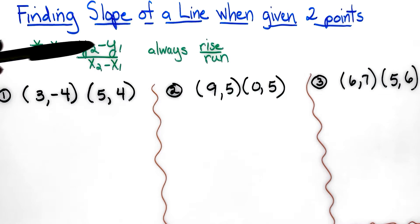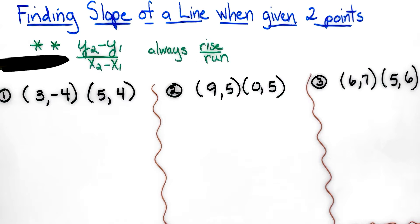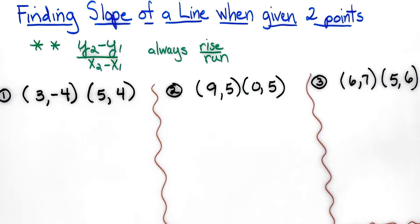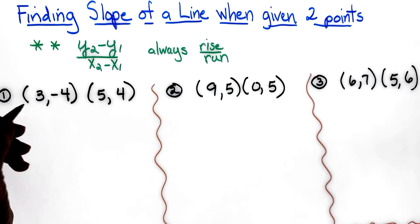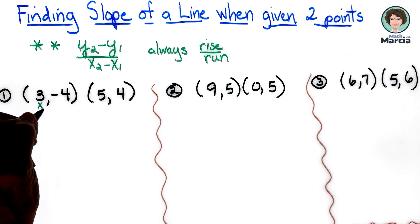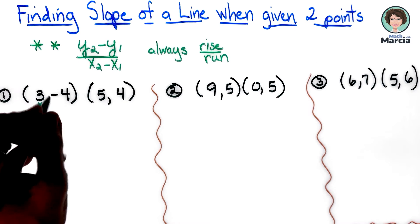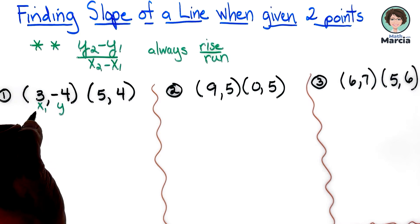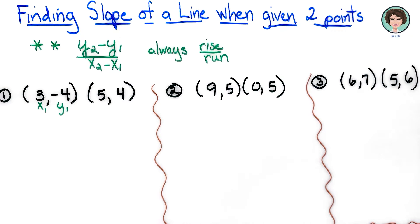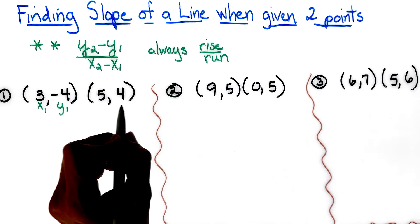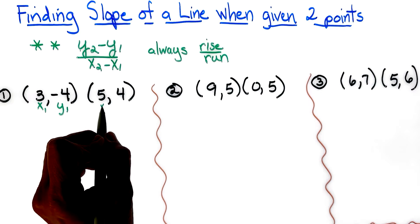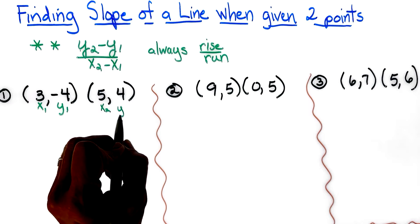When you put your numbers in here and simplify, you will find the slope. You might ask where do you get y2, y1, x2, and x1 — I am just labeling this as point one, so this is x1, y1, and this is my second point, so it is x2, y2.